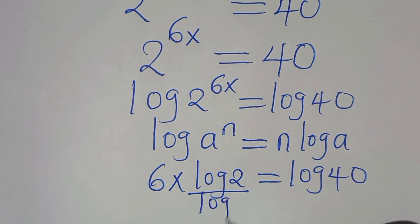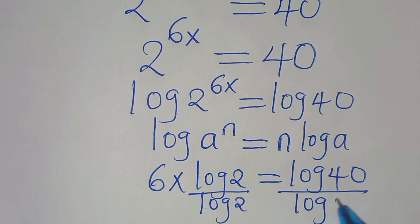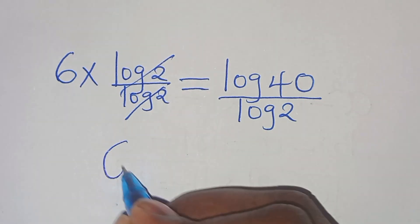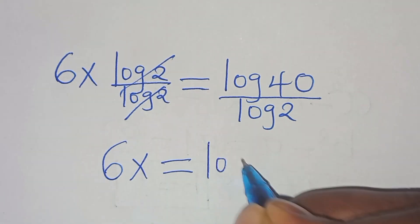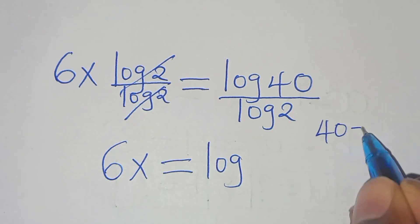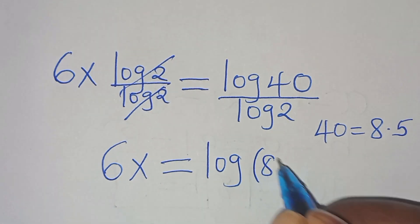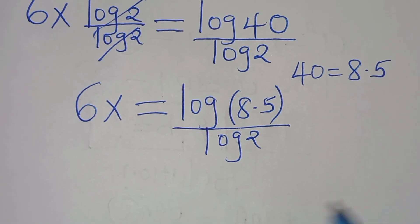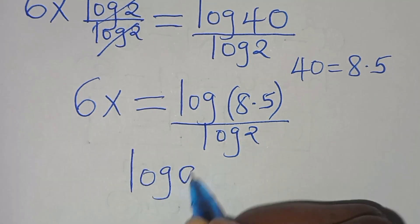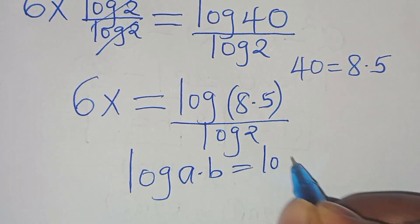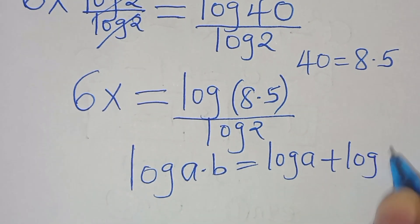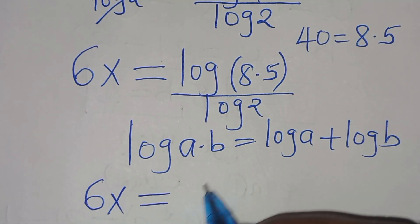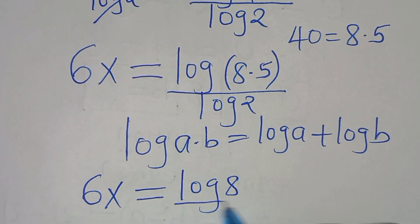So let's divide both sides by log 2. Simplifying log 2 and log 2, we have 6x equal to log 40 over log 2. We can express 40 as 8 multiplied by 5, so we have log of 8 times 5 over log 2. Log of 8 times 5 is in the form of log a times b, which we can express as log a plus log b. Applying this logarithm property, we have 6x equal to log 8 divided by log 2 plus log 5 divided by log 2.